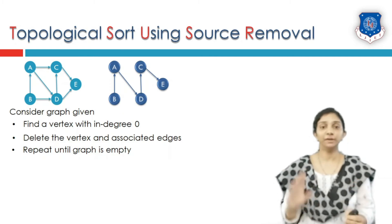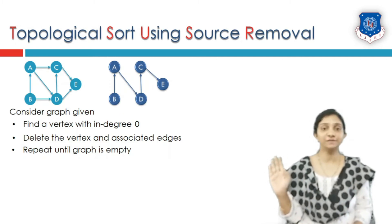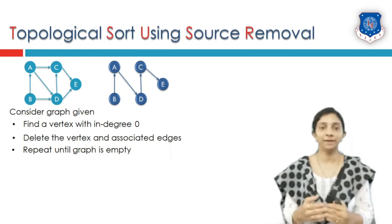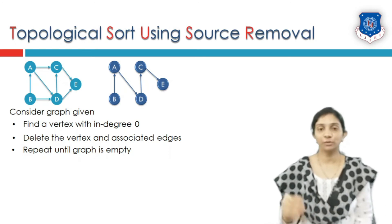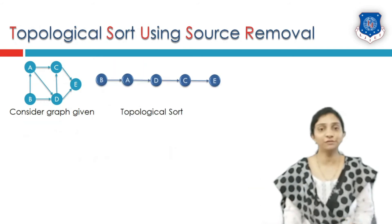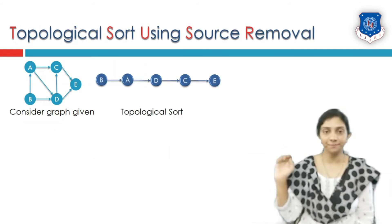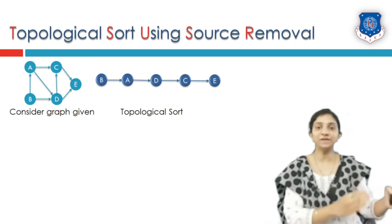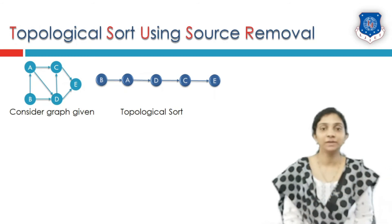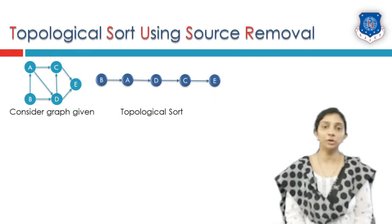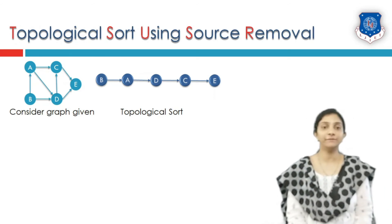From the given graph, the resultant vertices are sorted in a single order. We start with vertex B, then A, followed by C, D, and E. This is the equivalent topological order or topological sort of the given graph.